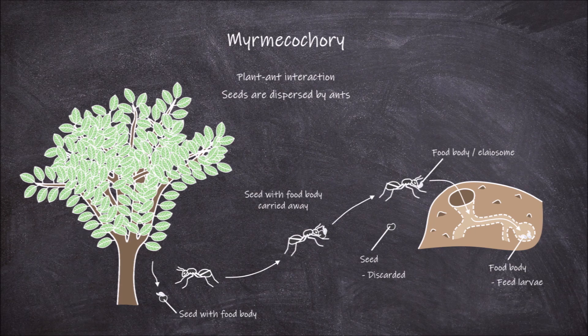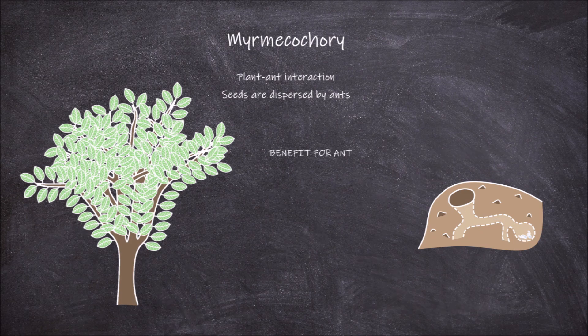The seed is discarded by the ant, either elsewhere in the nest or nearby the nest. This seed is still viable and intact and has now been dispersed by the ant away from the parent plant. What are the benefits of this interaction for the ant? The obvious benefit is that they receive food from the plant in the form of the elaiosomes.